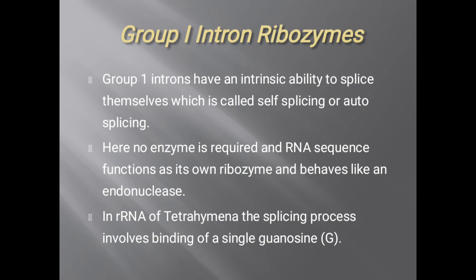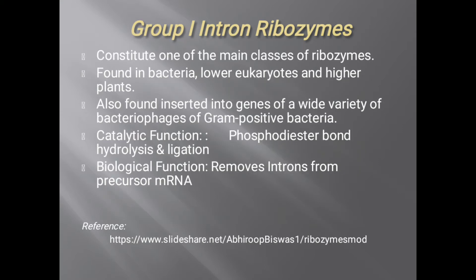Group 1 intron ribozymes have an intrinsic ability to splice themselves, which is called self-splicing or auto-splicing. No enzyme is required and the RNA sequence functions as its own ribozyme. They behave like endonucleases, which are enzymes that cleave phosphodiester bonds within the polynucleotide chain. In ribosomal RNA of Tetrahymena, the splicing process involves binding of a single guanosine. They are found in bacteria, lower eukaryotes, and higher plants, and inserted into genes of bacteriophages of gram-positive bacteria. The catalytic function is hydrolysis and ligation of phosphodiester bonds, and their biological function is to remove introns from precursor mRNA.